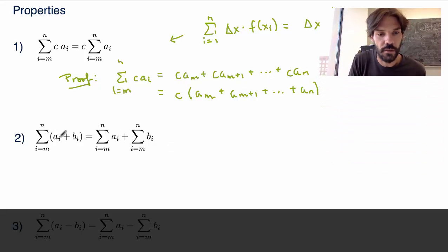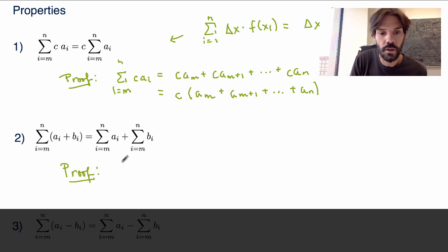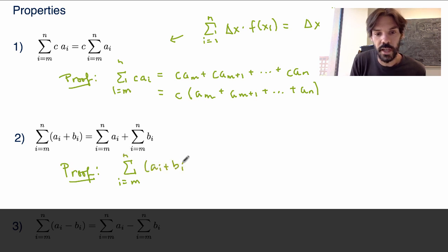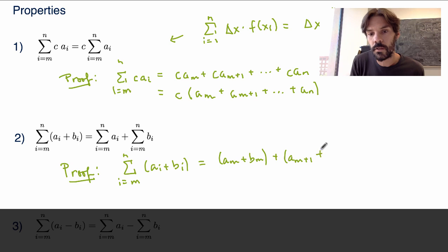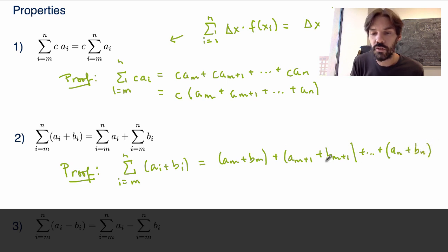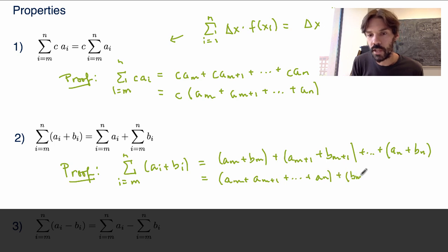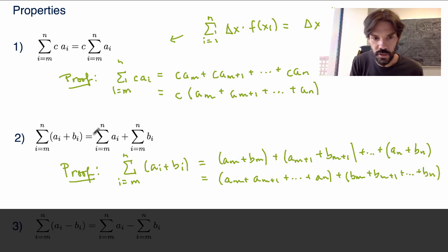Another property: if I have a summation of the sum of two terms, this is the same as summing the summations themselves. The proof is direct — if I have the summation of a_i plus b_i, I have a_m plus b_m, plus the same thing for i equals m+1, and so on. I can rearrange my terms, bringing all the a's together and all the b's together. This expression is just the sum of the a_i's plus the sum of the b_i's, so the property is proved.